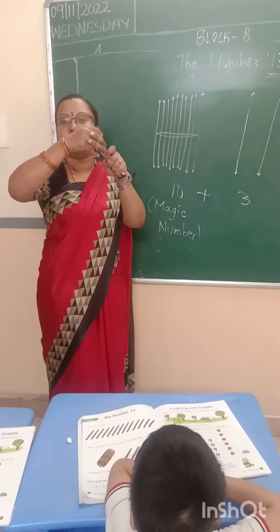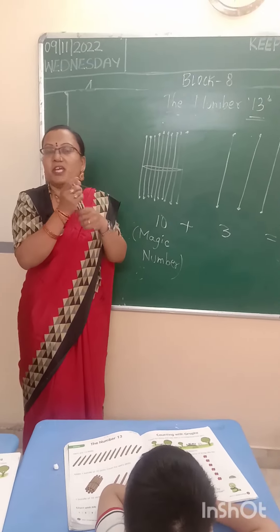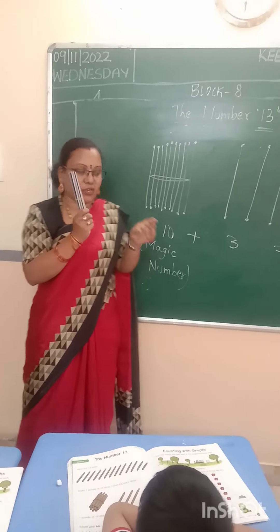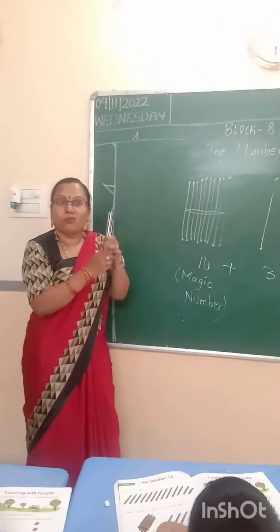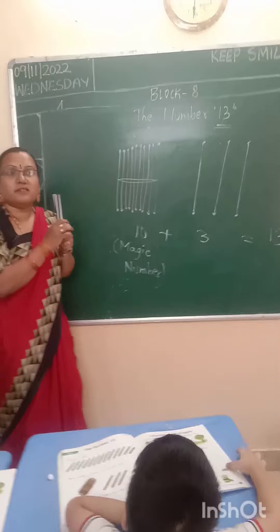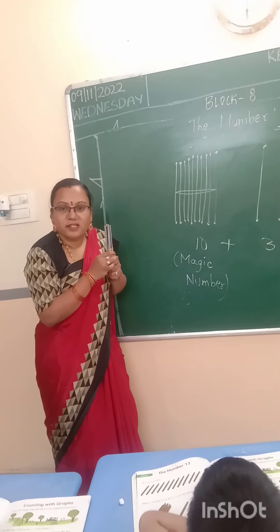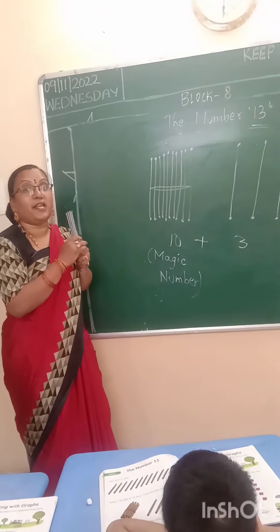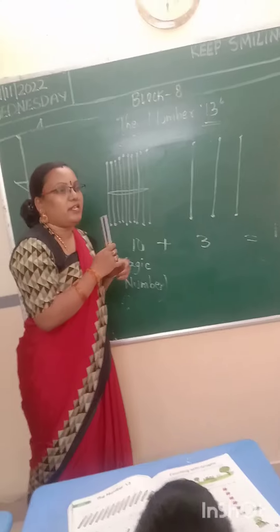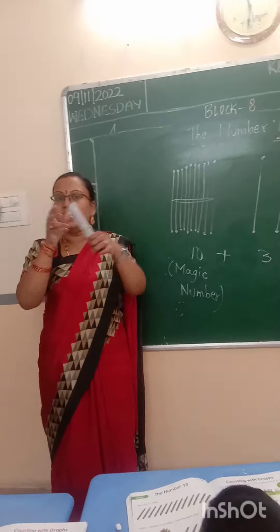So 10 — I will put a bundle to this. See here. Why are we taking only 10, children? Because 10 is called a magic number. What is 10? Magic number. What is magic number? 10. So I will put a bundle. See here — 10 bundle.